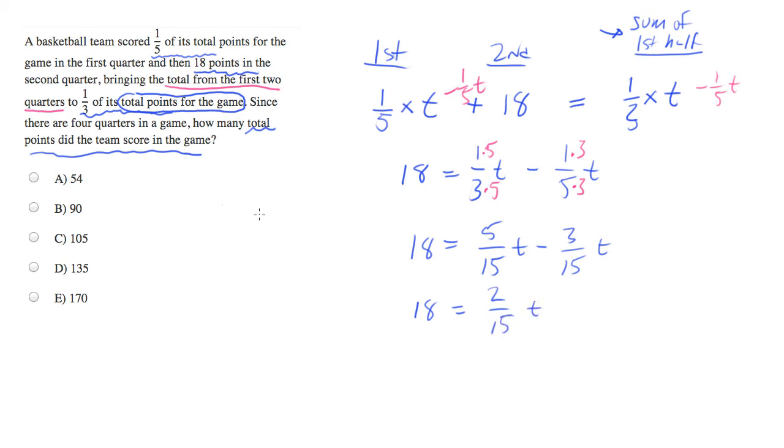Now let's multiply both sides by 15. We get 15 times 18, which I'm going to plug into a calculator, 270 equals 2t. And let's divide both sides by 2. And what we'll find is that 135 equals t, and that is answer choice D.